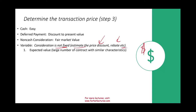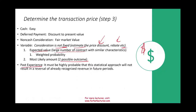For variable consideration, we have two methods. First, the expected value — used when we have a large number of contracts with similar characteristics, applying a probability-weighted approach. Second, the most likely amount — used when there are two possible outcomes; we take the higher probability outcome. When using variable consideration, you must have past experience, and it must be highly probable that the approach will not result in a reversal of already-recognized revenue.